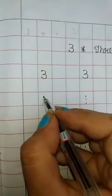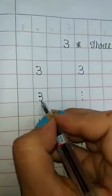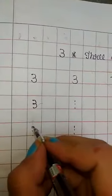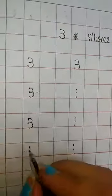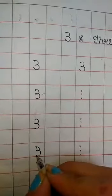How to write 3? Look here. Firstly make semicircle. Then downside make also semicircle. 3. What is this? 3. Semicircle make upper side. Downside make also semicircle. 3.